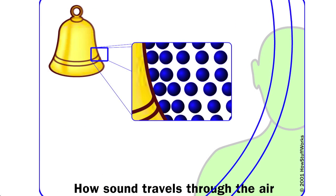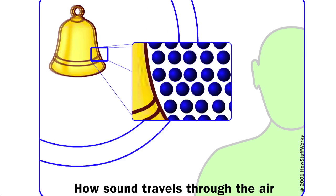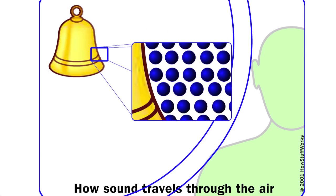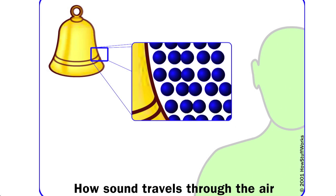Take a look at this example. When the bell rings, it vibrates, which means the bell is moving inward and outward very rapidly. When the bell moves outward, it pushes against the air particles that push against other adjacent air particles, and so on.